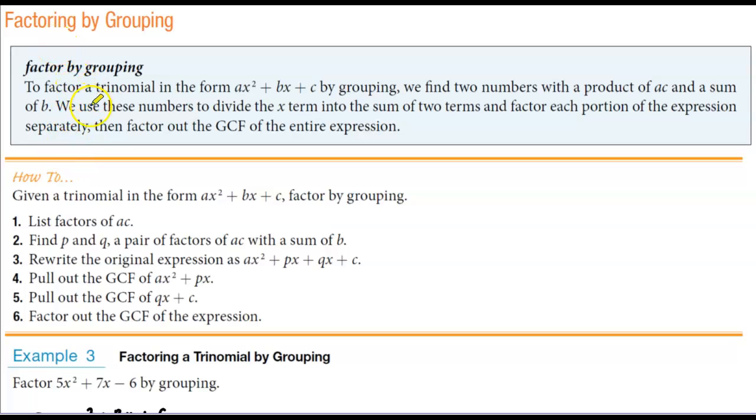Factoring by grouping. To factor a trinomial in the form ax² + bx + c by grouping, we find two numbers with a product of ac and a sum of b.